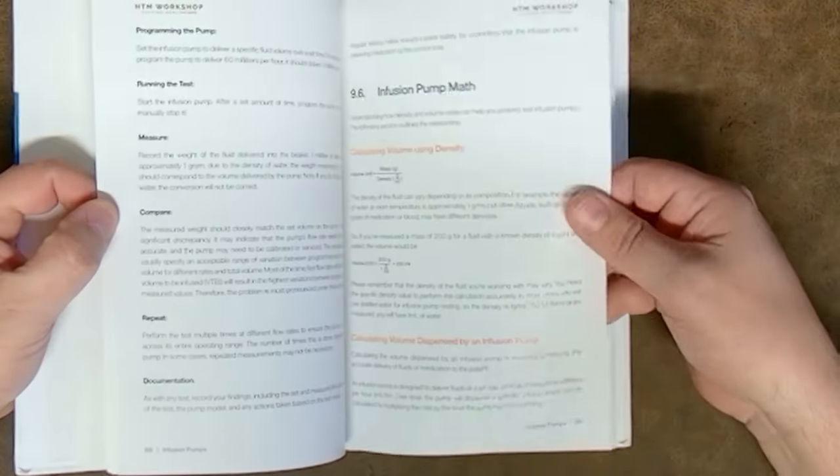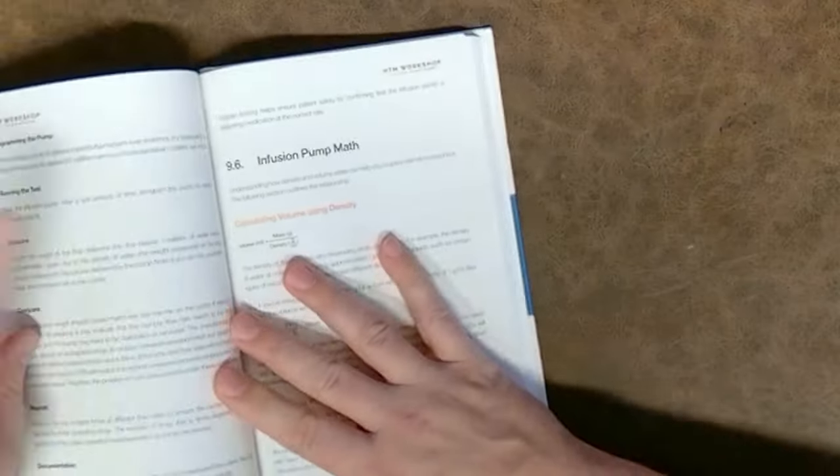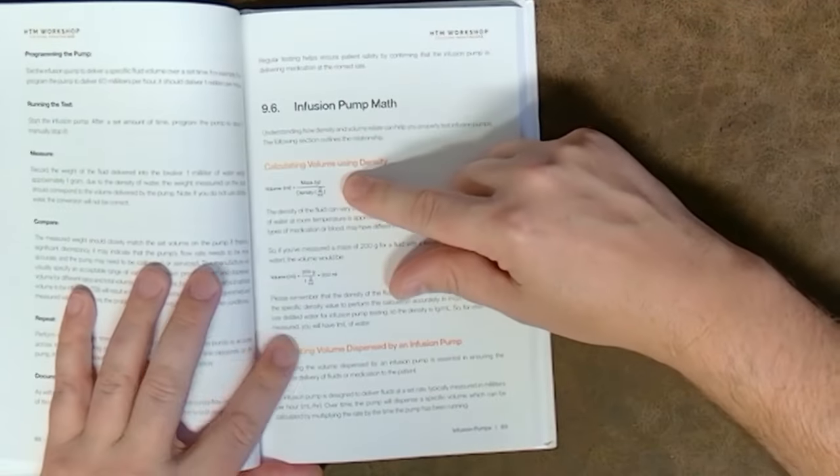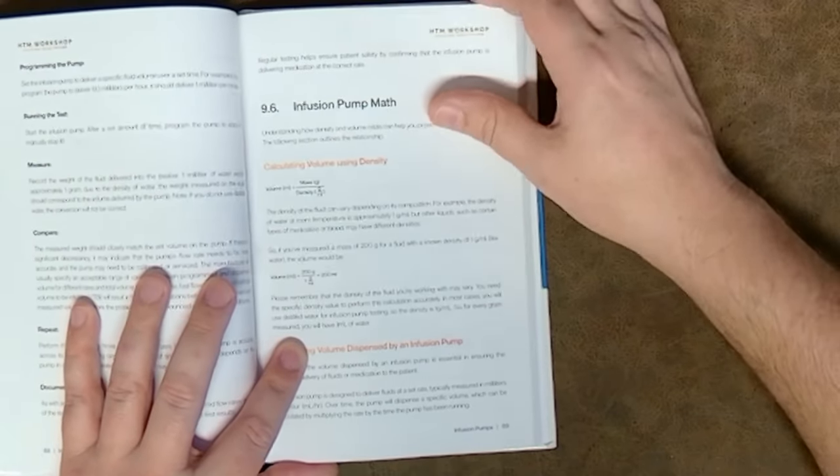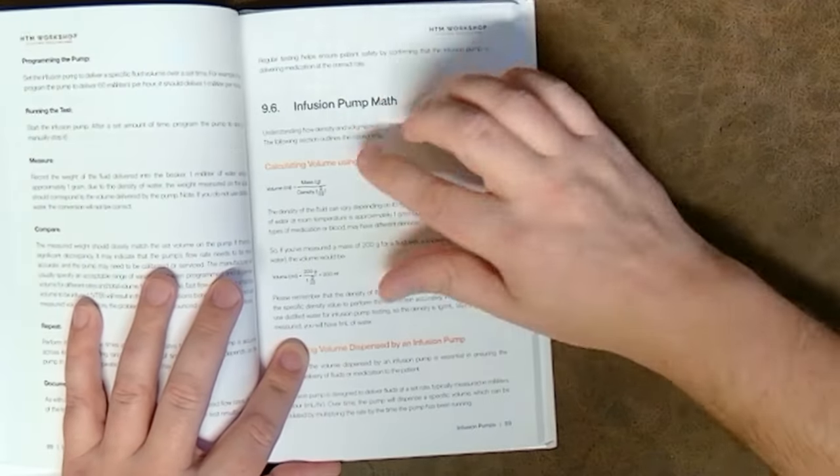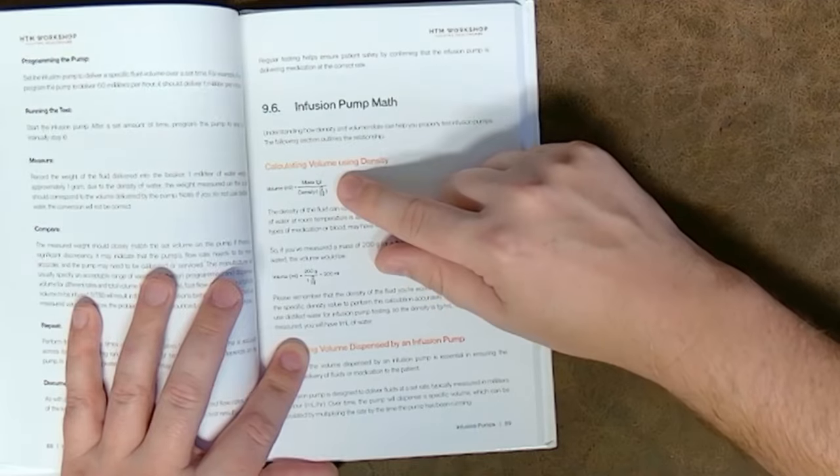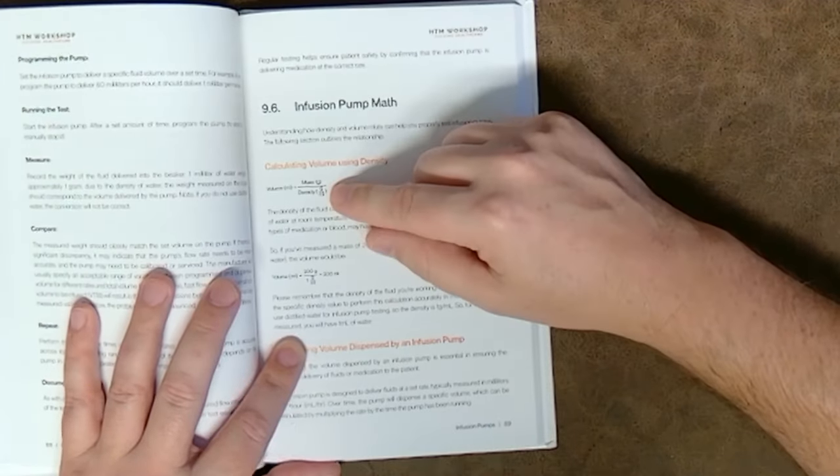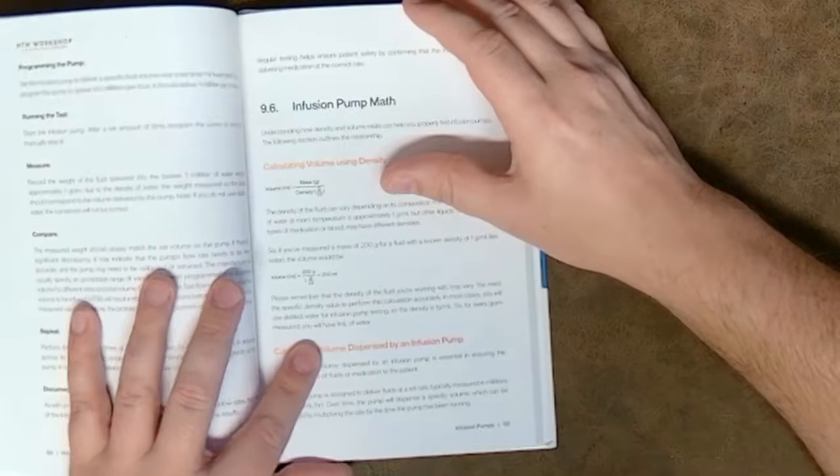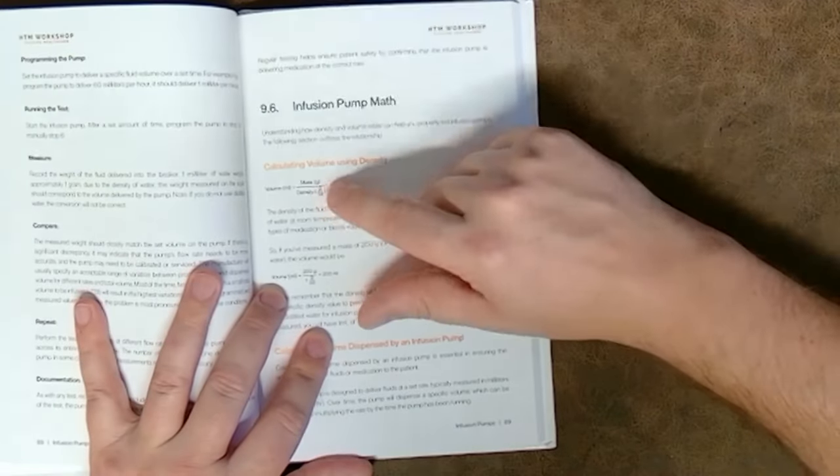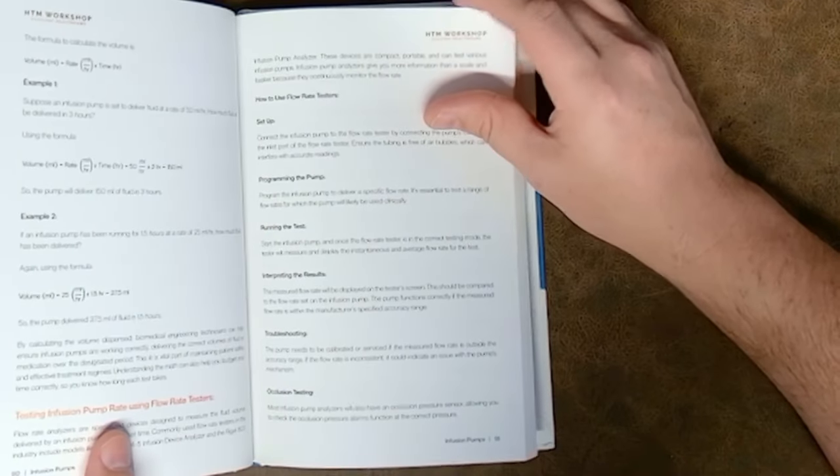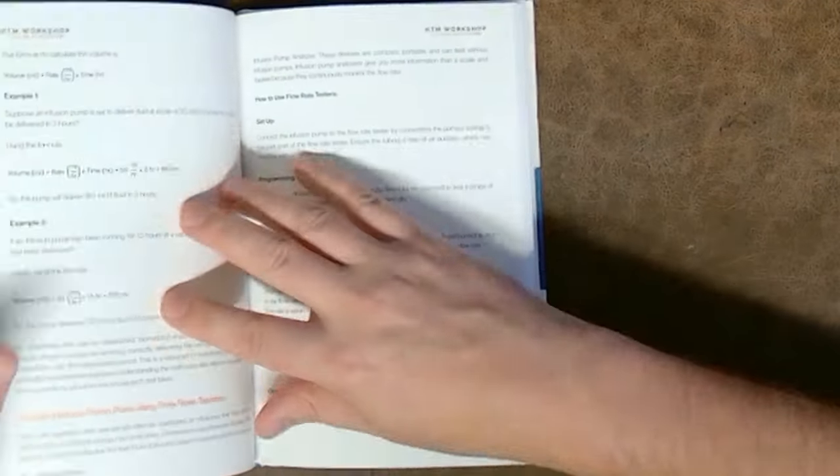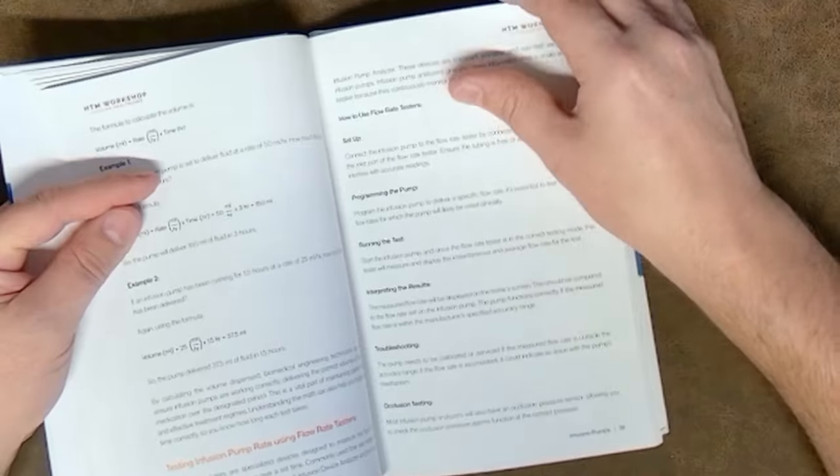Very neat. Look at this, he actually has the formulas that break down—as you know, mass and volume are cross-calculable. Some infusion pumps will do it by mass on a scale and some of them will do it by volume. He gives all the formulas so that you can look it up yourself and he gives a couple examples. Very neat man, this is extremely thorough.